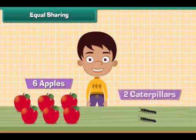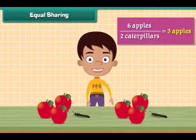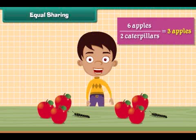If there are six apples and two caterpillars, each caterpillar will get three apples. Six apples divided by two is equal to three apples each.